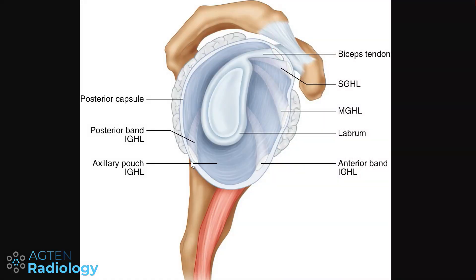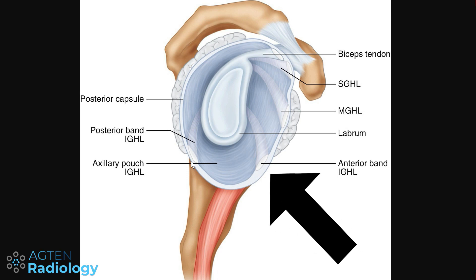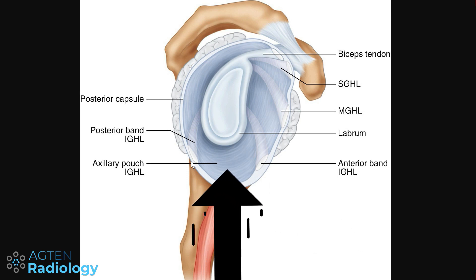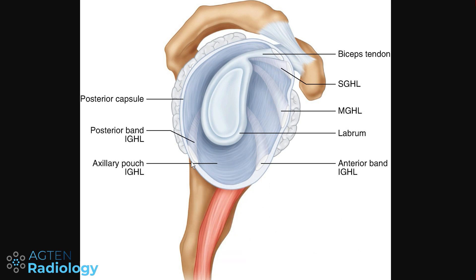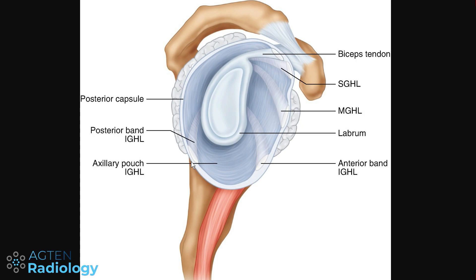Welcome back. Before we start, here is just a repetition of the anatomy. We have the anterior band, then we have the axillary pouch, and the posterior band. This is important to keep in mind throughout the cases.